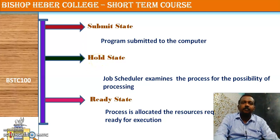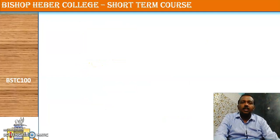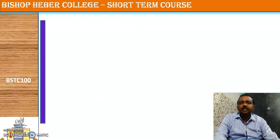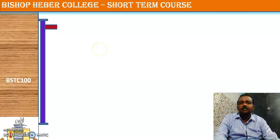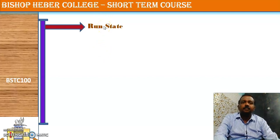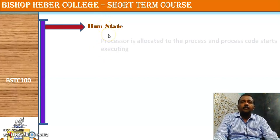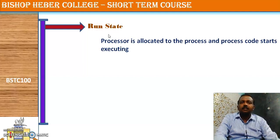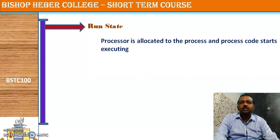All the resources are allocated, and only after crossing these three states can a process actually move to the run state. The run state is where actual execution is done — the processor time is given to the process and the processor code starts getting executed. This is where the actual execution happens.